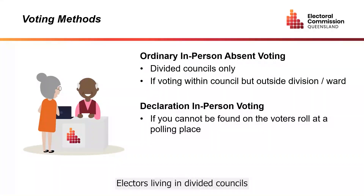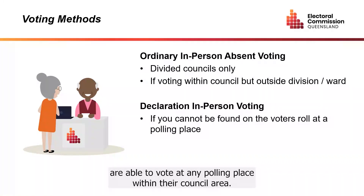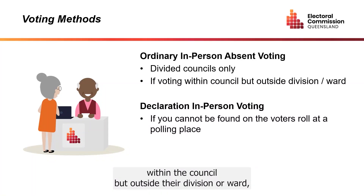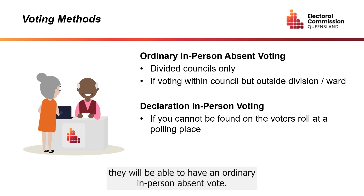Electors living in divided councils are able to vote at any polling place within their council area. If the elector is enrolled and votes in a polling place within the council but outside their division or ward, they will be able to have an ordinary in-person absent vote.